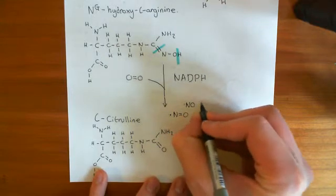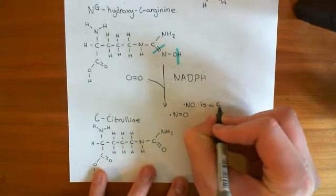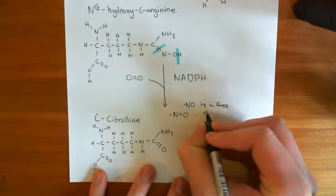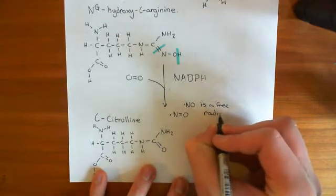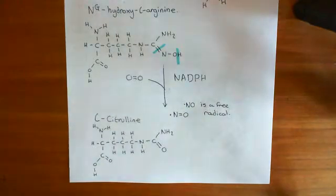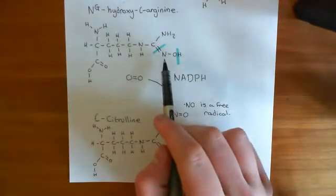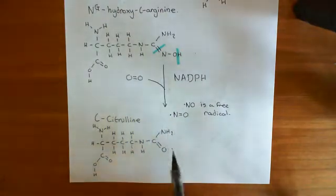So, nitric oxide is a free radical, meaning that it's got this free electron, basically. And free radicals are extremely reactive chemical species because they don't like having free electrons. So, it's this guanidino nitrogen here that went into the nitric oxide.